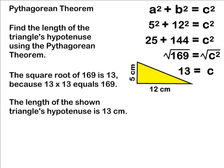So now on one side of our equation we have 13 and on the other side we have c all by itself. So now we can say the length of our hypotenuse is equal to 13 centimeters.